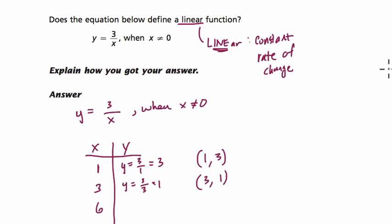And so far, this could be linear because if you look at our points and what's happening, we go up 2 and then down 2. If this keeps happening, then it's a constant rate of change.